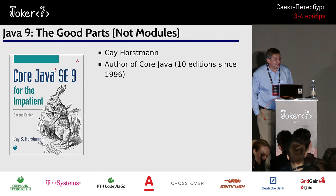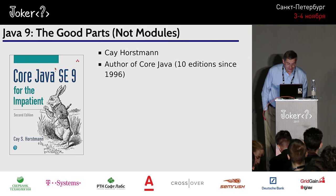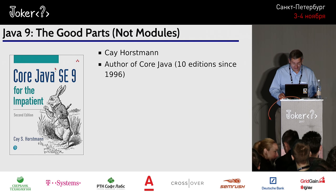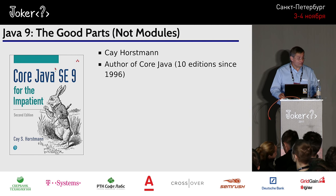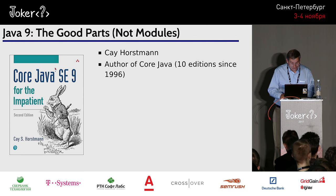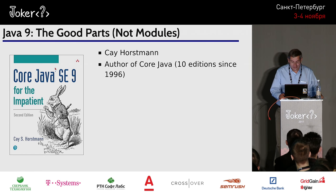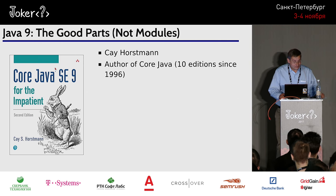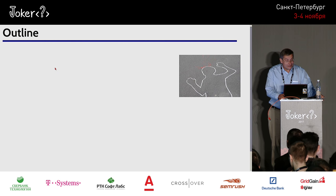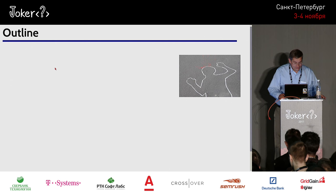I'm Cay Horstmann. I'm the author of Core Java. I've been writing this book for 10 editions since 1996, probably since longer than most of you have been working with Java. I'm going to be talking about Java 9 and we'll focus on the good parts of the API.